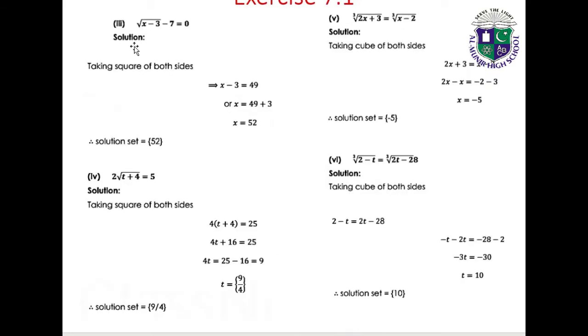Part 3: √(x minus 3) minus 7 equals 0. Taking the square of both sides: x minus 3 equals 49, so x equals 52. Solution set: {52}.